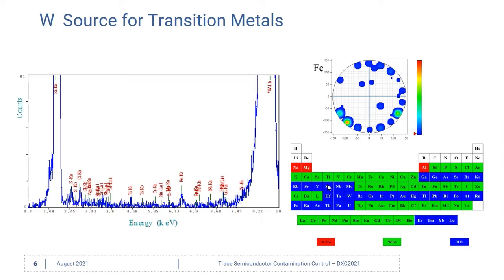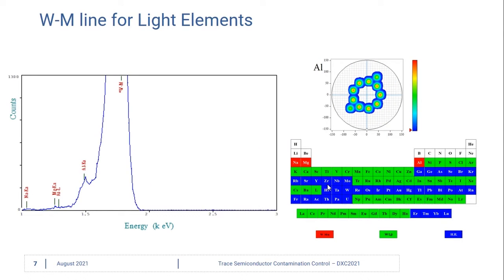In between these two peaks are the elements of contamination that we've detected on the surface of the wafer. We choose the tungsten M line for our light element analysis of sodium, magnesium, and aluminum because its excitation energy is just below the absorption edge of silicon.